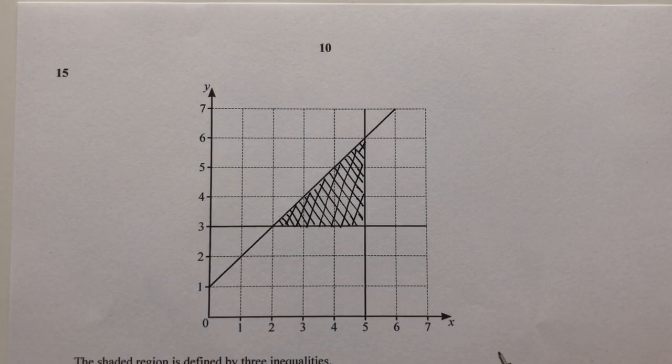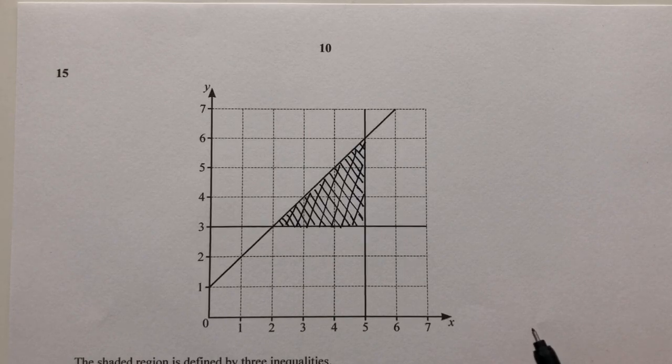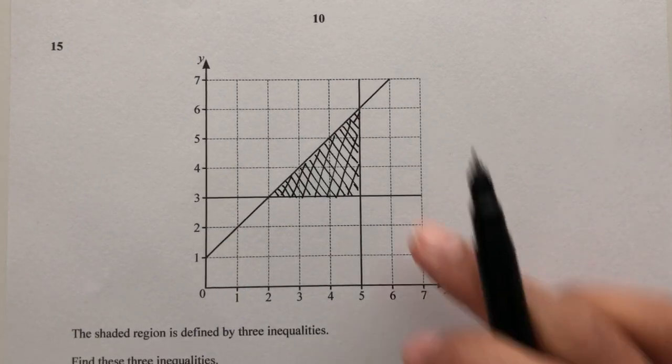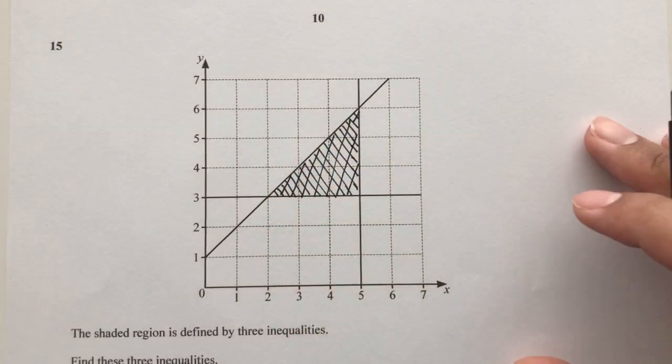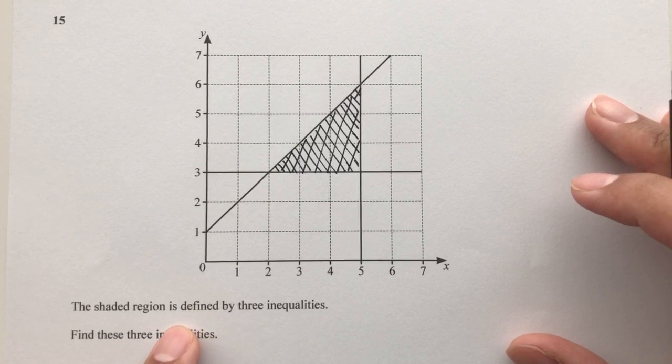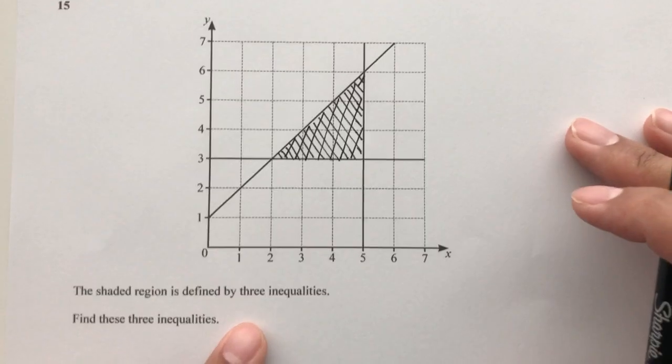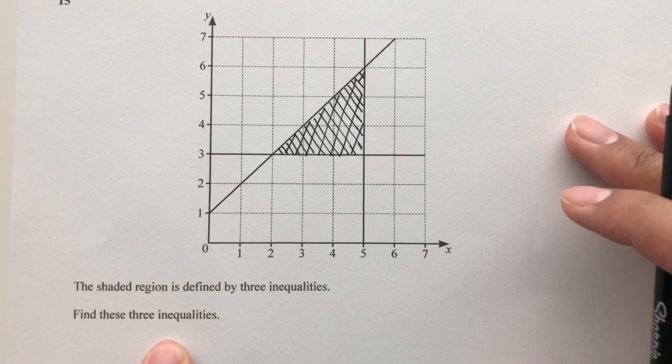Hello guys, welcome to this new video. This one is a requested question from paper 1 of 2020, question 15. As you can see, we have a region that has been shaded. It says that this region is defined by three inequalities, so we have to find these three inequalities.